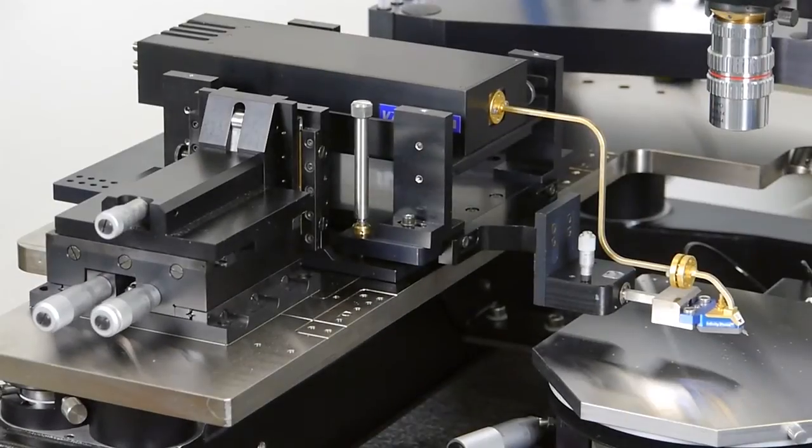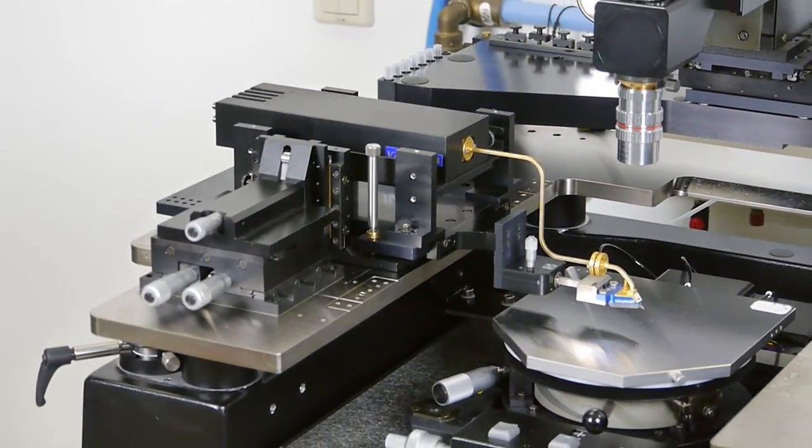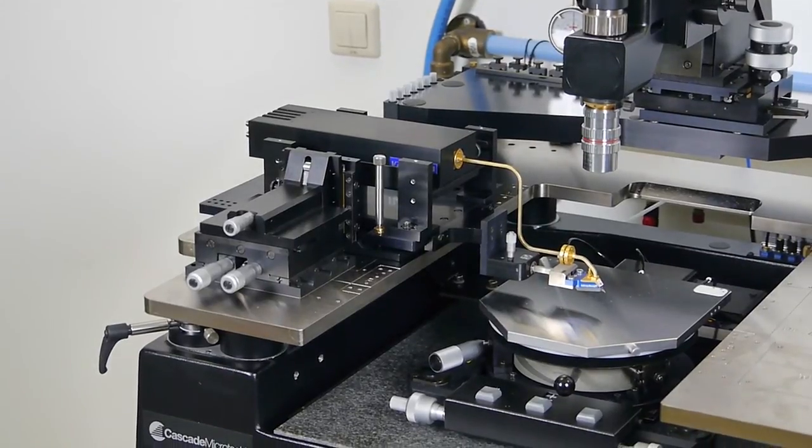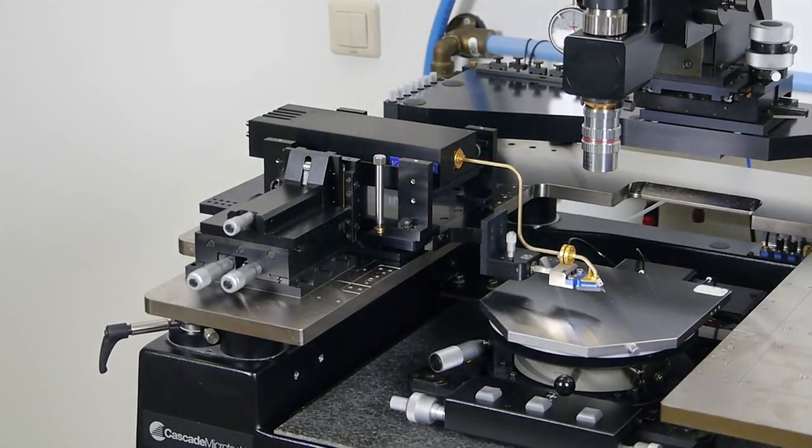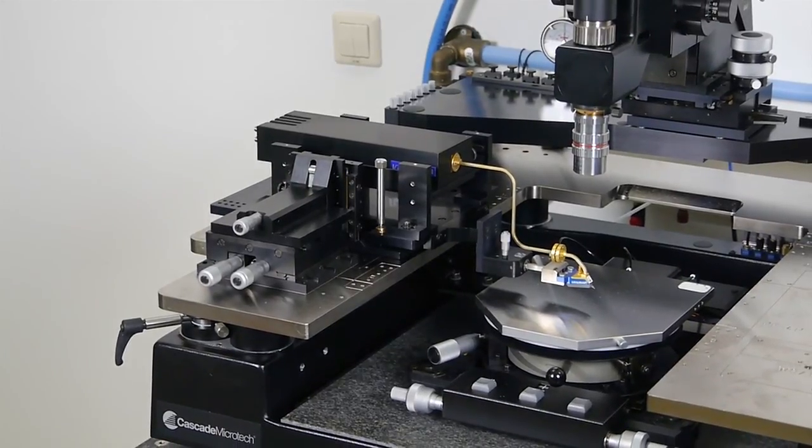For higher frequencies, especially above 220 GHz, it is more and more important to have minimum losses in the connection between the module and the probe. For this we have a solution too, direct probe mount. Here is what is needed to do this. Again, remove your current setup from the Sigma kit and remove the front arm.